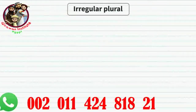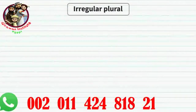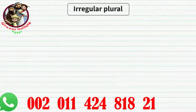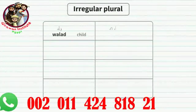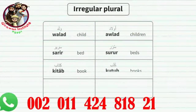The broken or irregular plurals. The irregular plurals in Arabic have many different patterns, so it's recommended that while learning a new word, you try to learn both the singular and the plural form. Some examples: walad/awlaad, sarir/surur, kitab/kutub, qit/qitat.